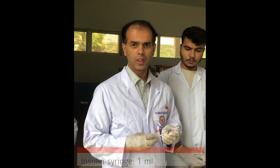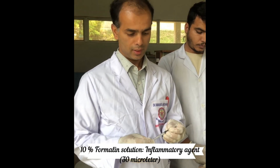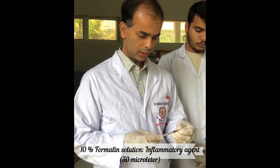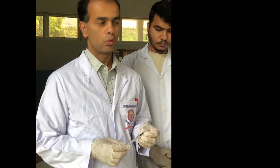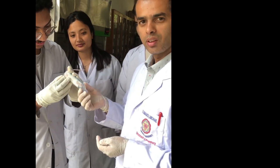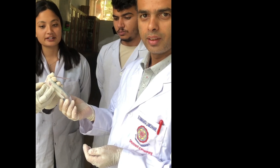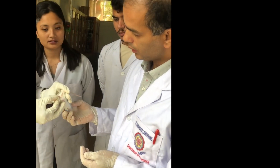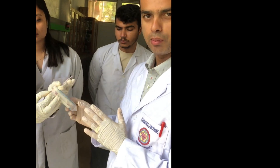We are going to inject 0.03 ml — that is around 30 microliters — of 10% formalin, which is an inflammation-inducing agent. We are going to inject it into the paw of the mice. To start the experiment, we have to hold the mice properly so that we can inject the inflammatory agent comfortably.